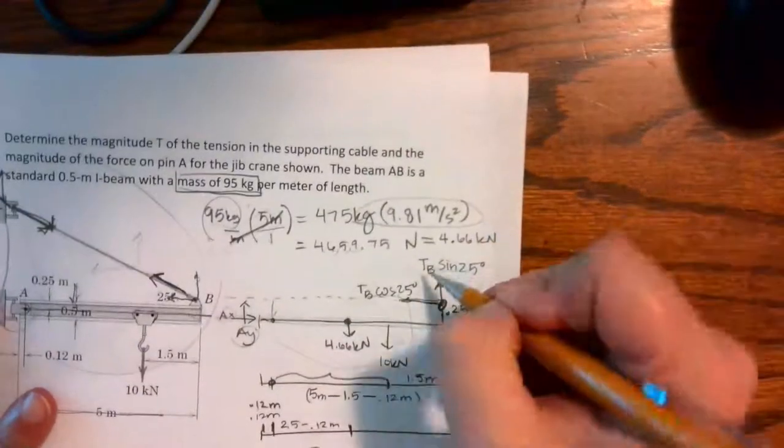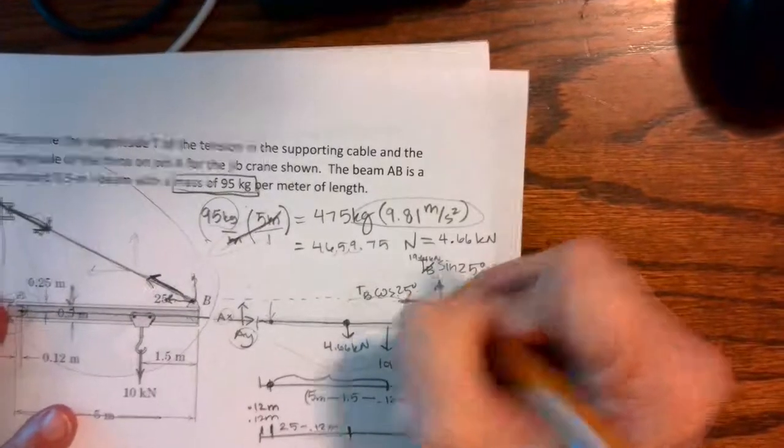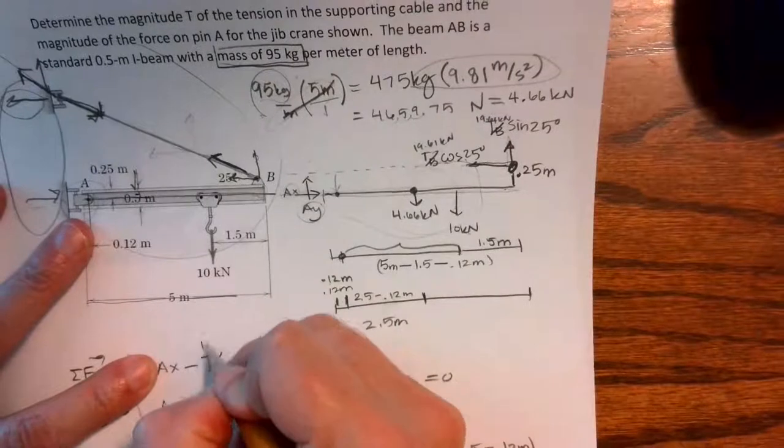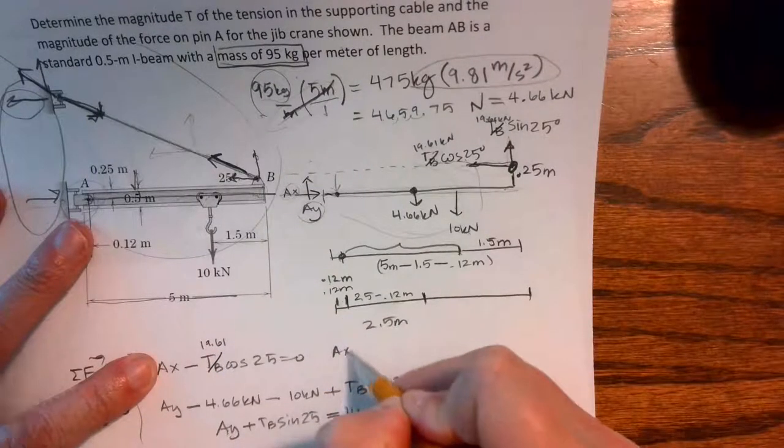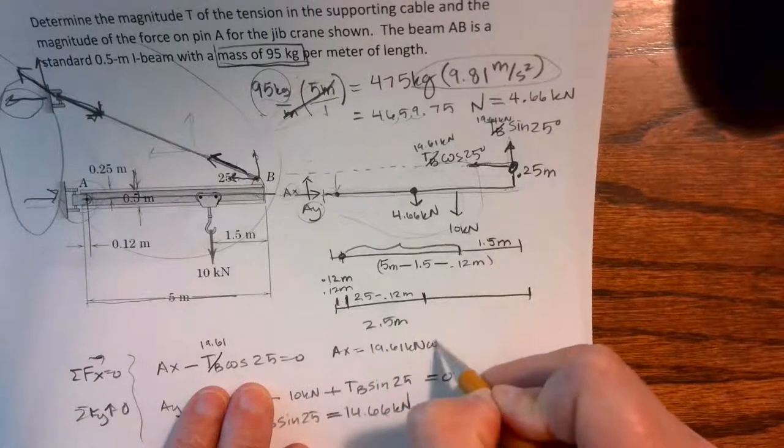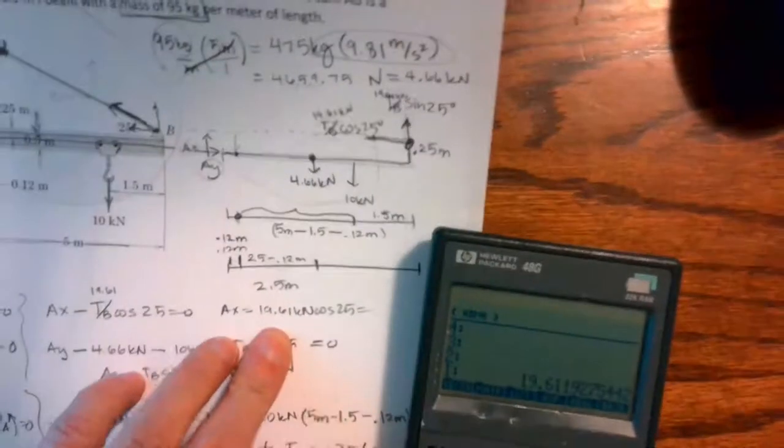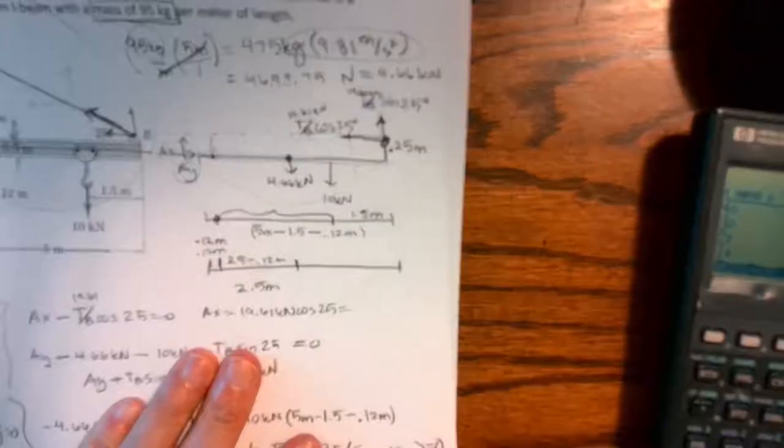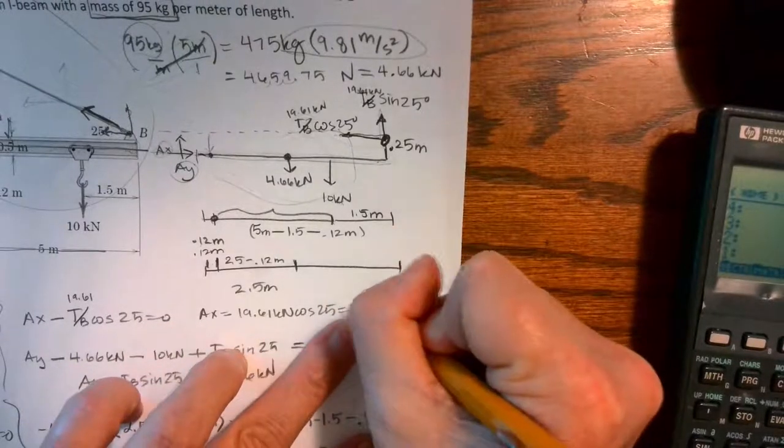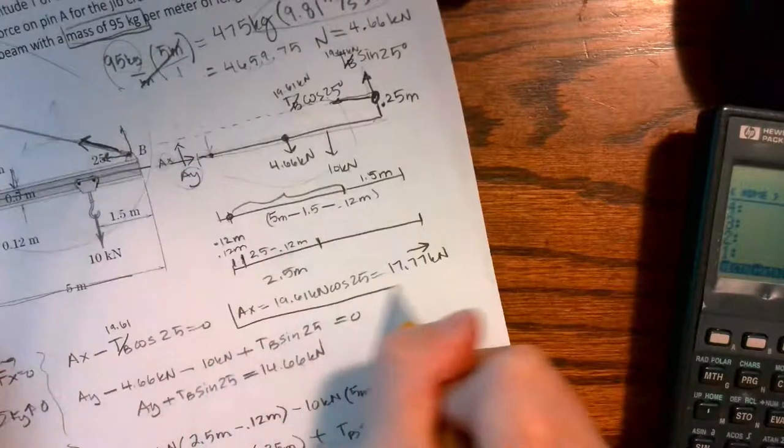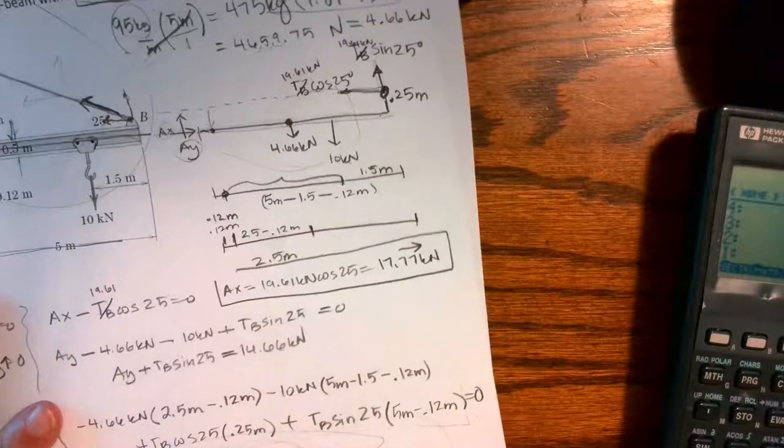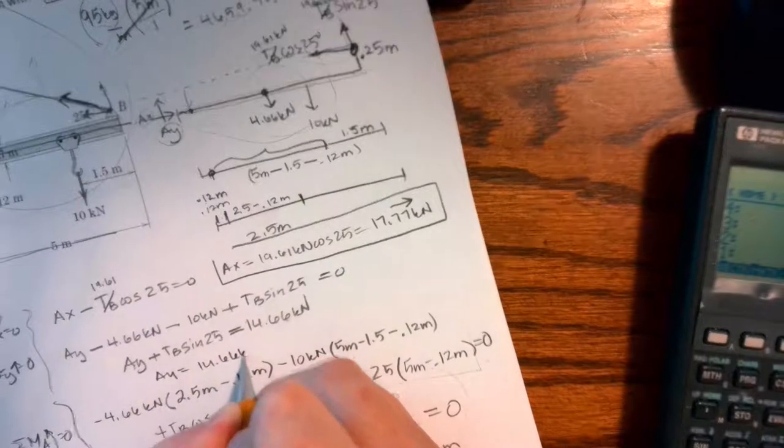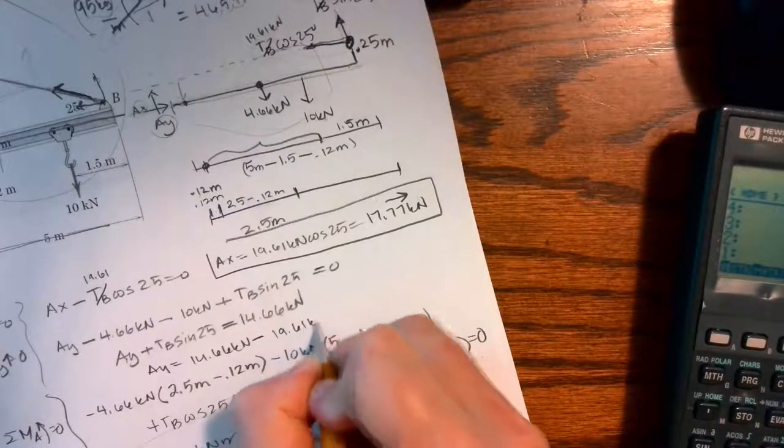That's the tension in my cable, so I go back up to my picture and put 19.61 kilonewtons. I also have my Ax equation, so Ax equals 19.61 kilonewtons cosine 25, which equals 17.77 kilonewtons positive to the right, so I was correct.